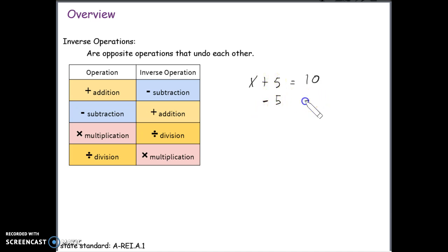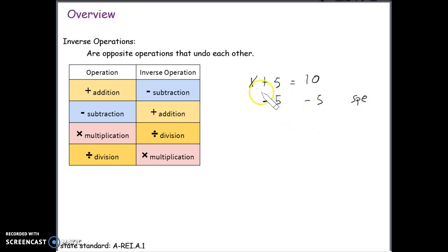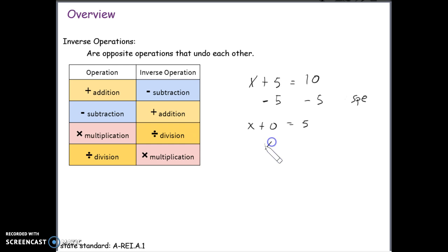We'll subtract 5 and make sure to do this to both sides. When we do that, the addition is undone by the subtraction — 5 minus 5 is 0 — so we have x plus 0 equals 5. We know that anything plus 0 is just whatever is being added to 0, which in this case is just x, so x equals 5. We use these inverse operations to help us rearrange equations to eliminate things.